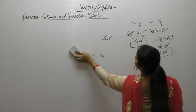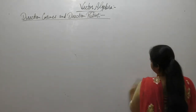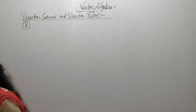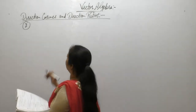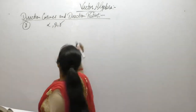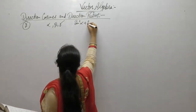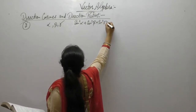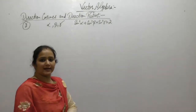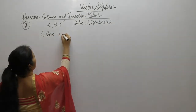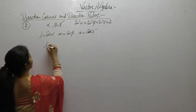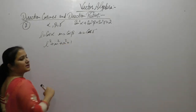Question number 2: If a vector makes angles α, β, γ with OX, OY and OZ respectively, prove that sin²α + sin²β + sin²γ = 2. If these are the angles made with the X, Y and Z axes, then l = cos(α), m = cos(β) and n = cos(γ). We know the condition that l² + m² + n² = 1.